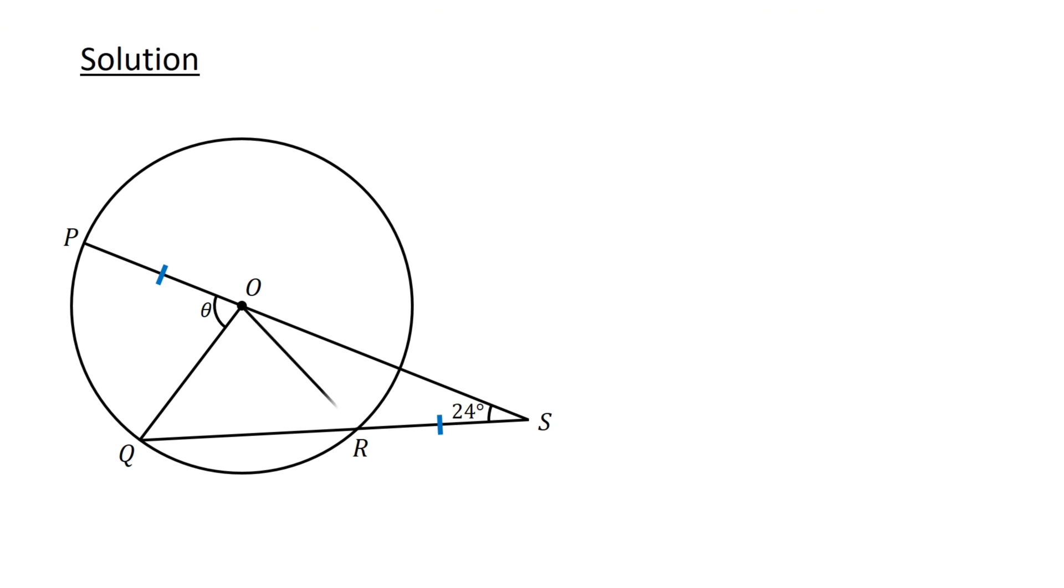First, connect O to R. Since the line segments OP and OR are the radii of the circle, the length of OR equals the length of OP.